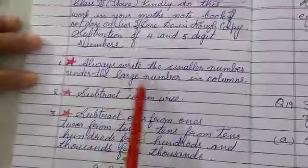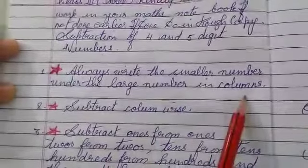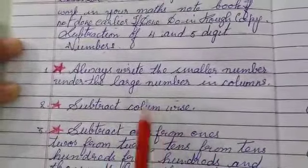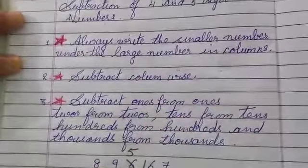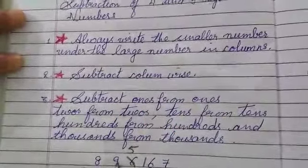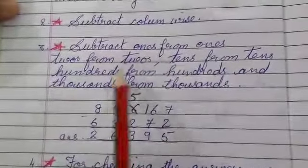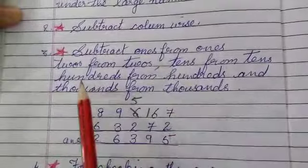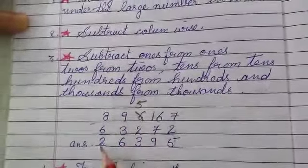First point is always write the smaller number and the larger number in the columns. You have squares in that you write. Then subtract column-wise. First ones, then tens, hundreds, thousand, ten thousand. You have to subtract like this. Subtract ones from ones, tens from tens, hundreds from hundreds, thousands from thousands.